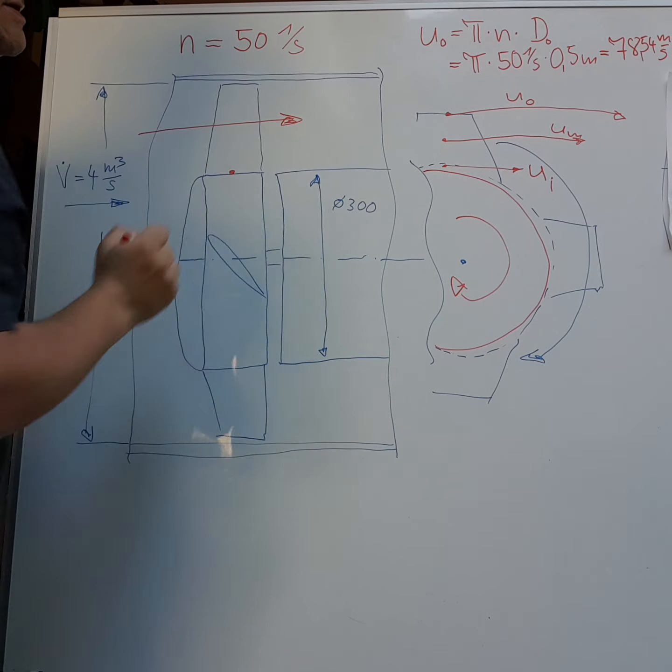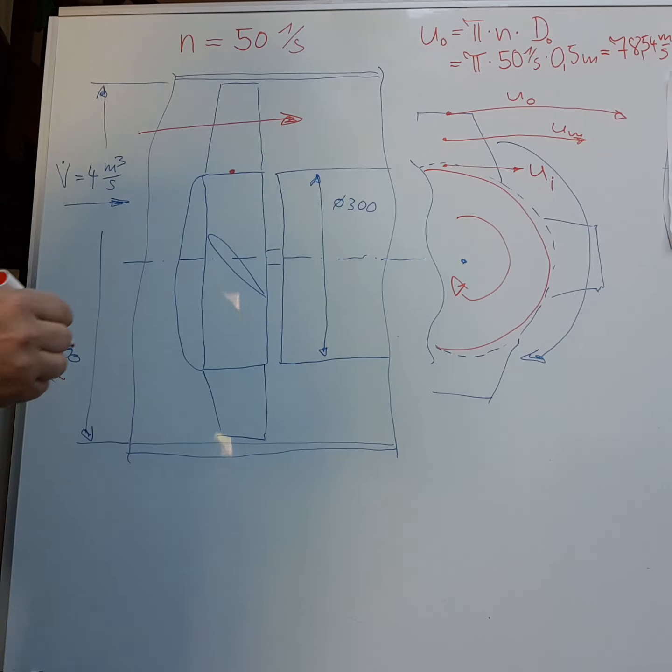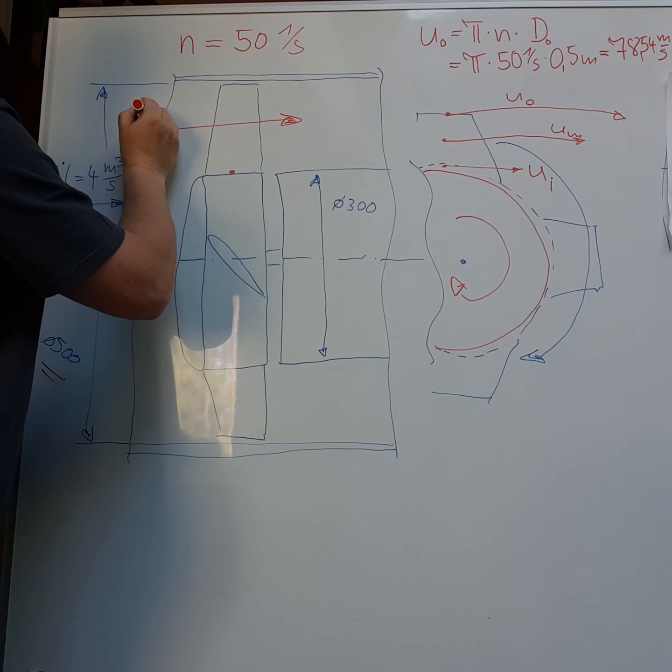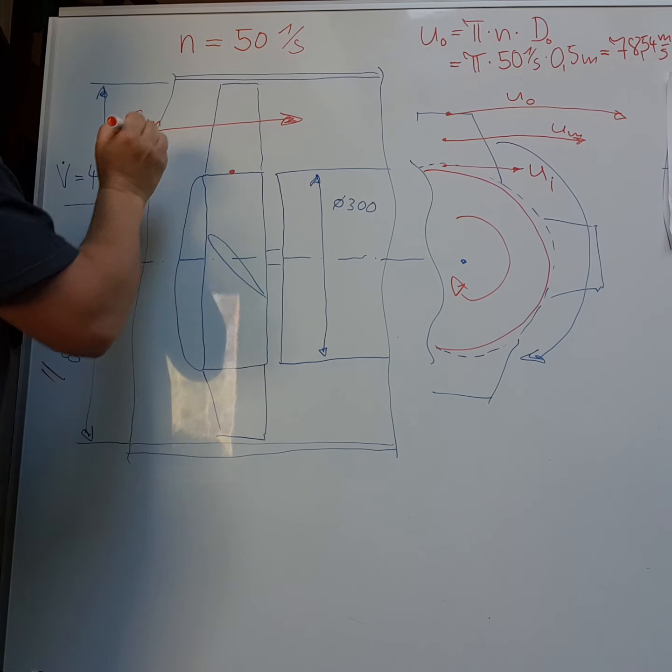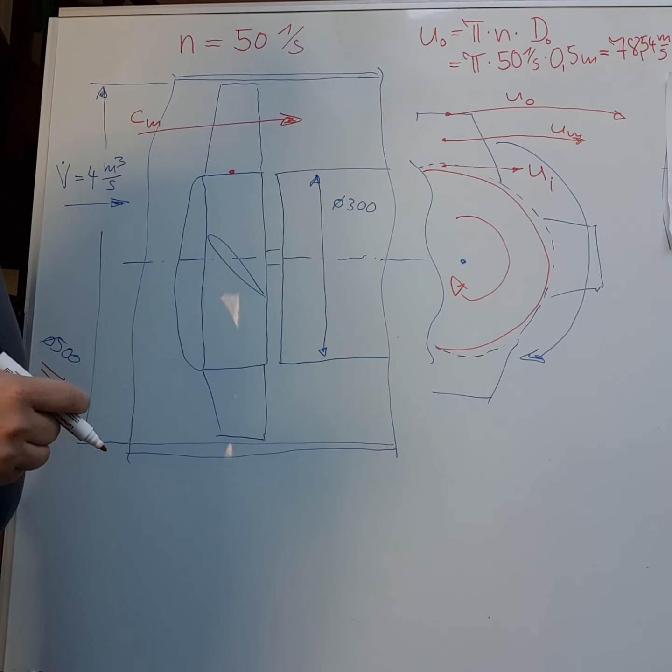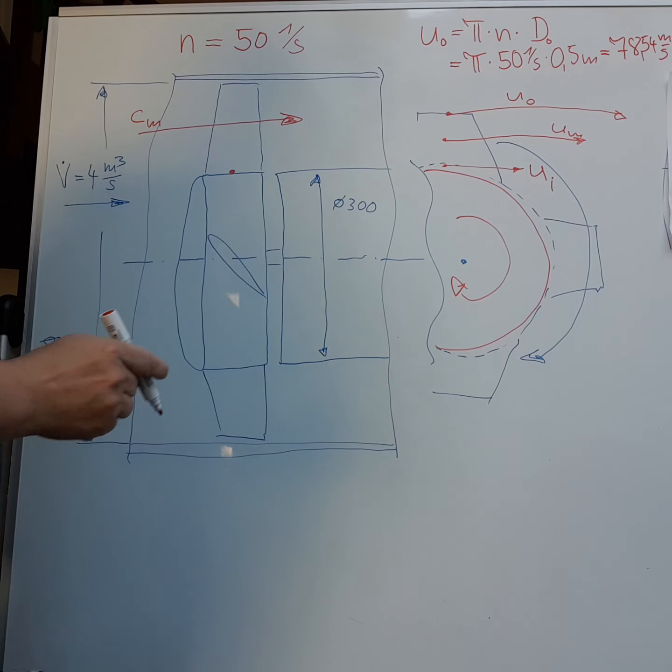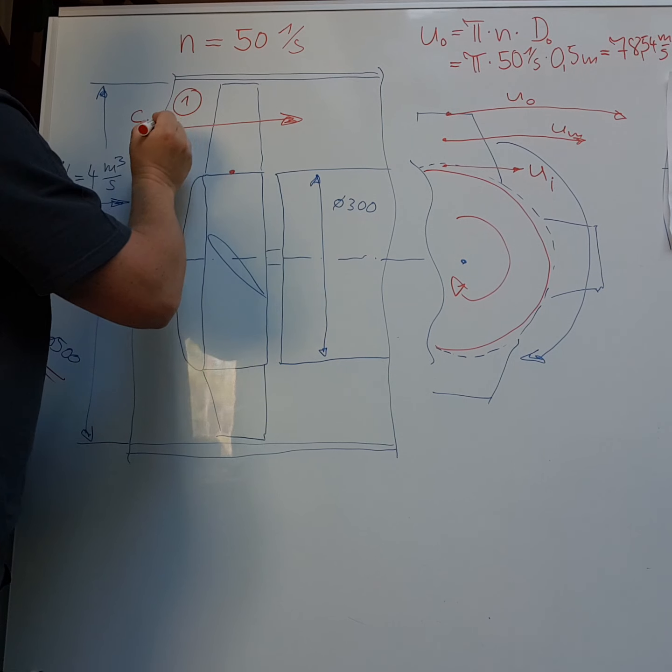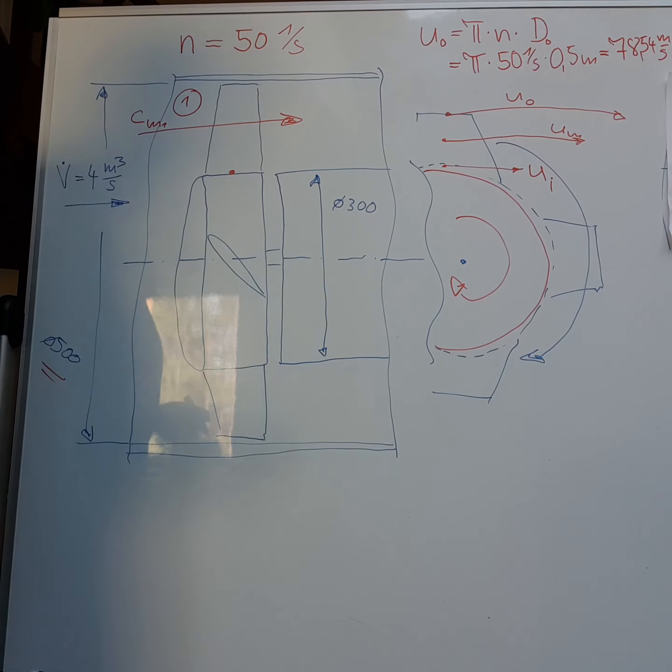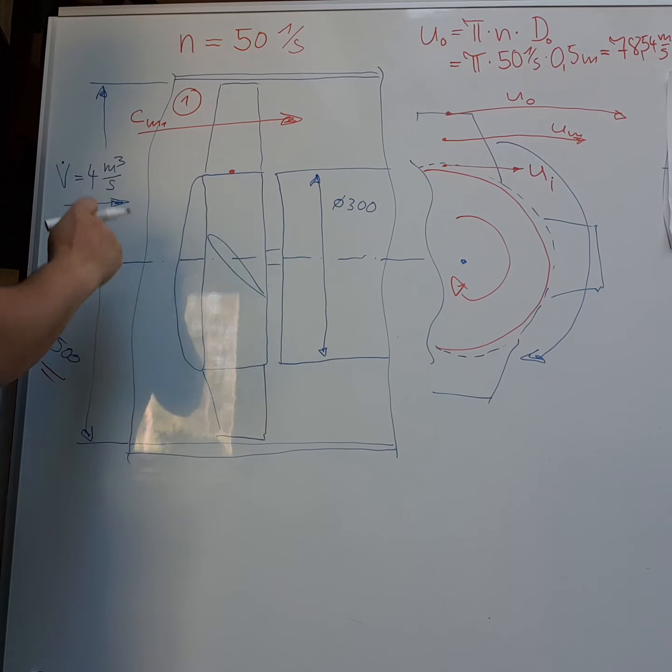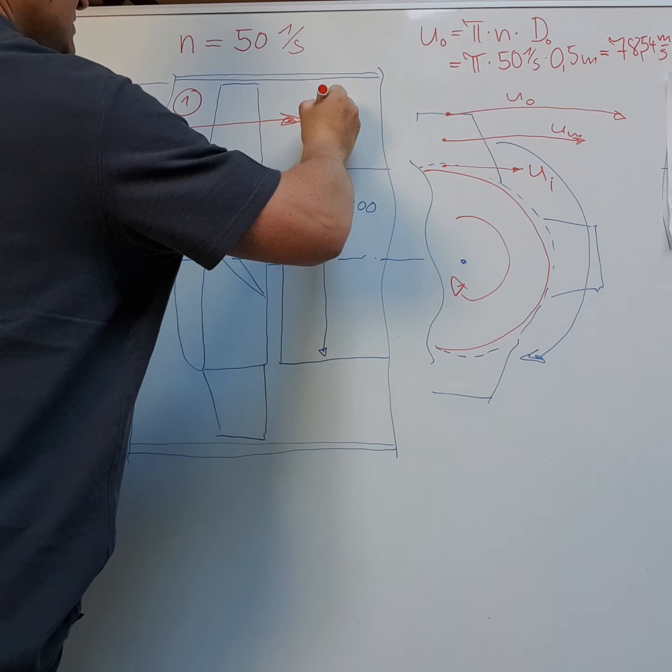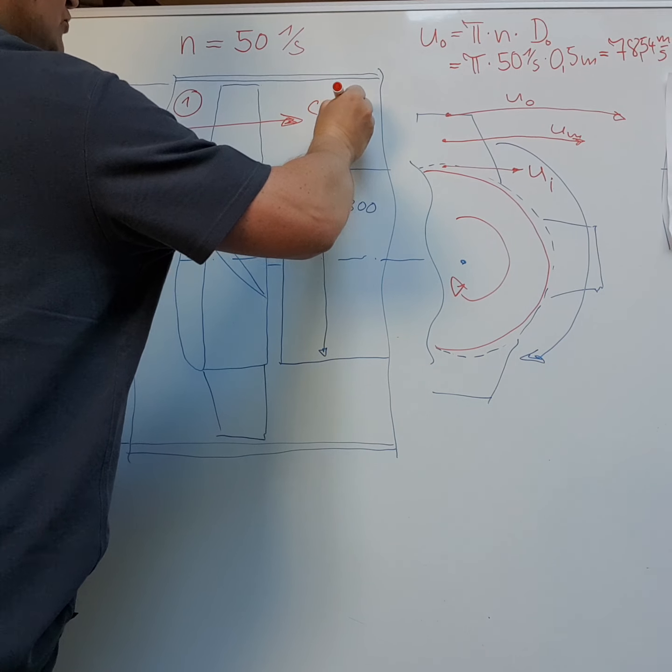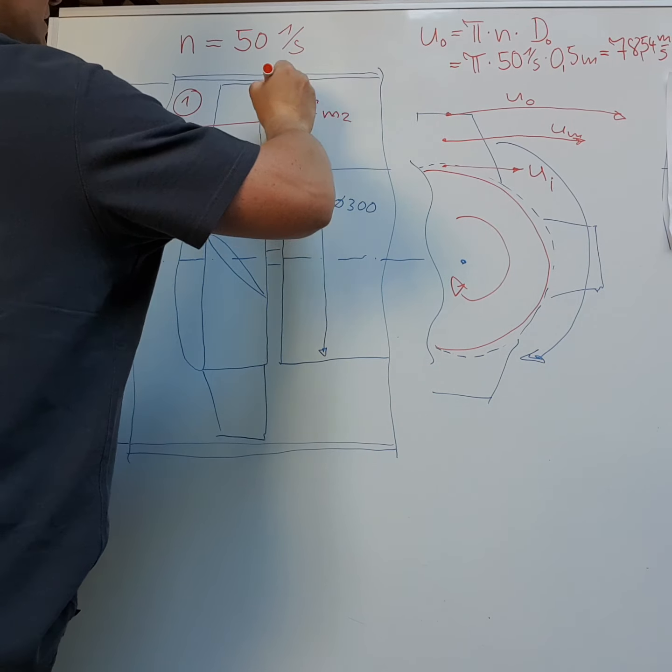For air velocity we always take the symbol CM for mean velocity. CM1 is the velocity before the fan and CM2 is the velocity after the fan.